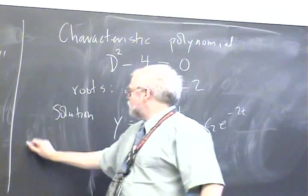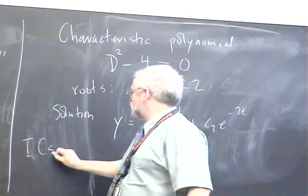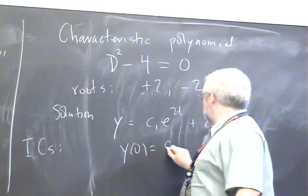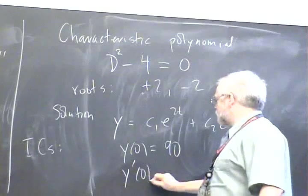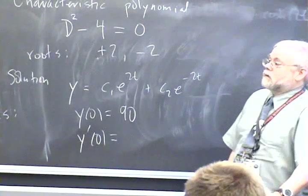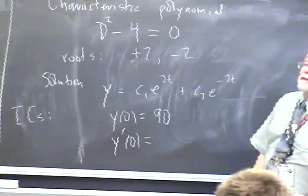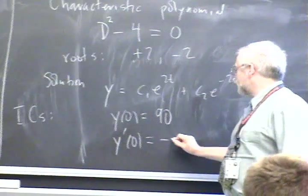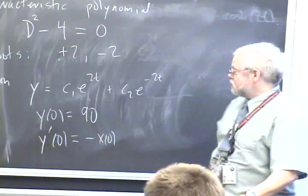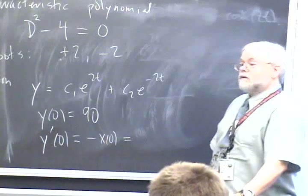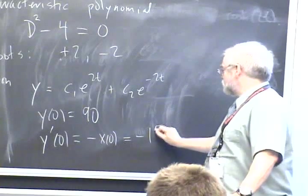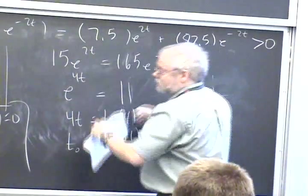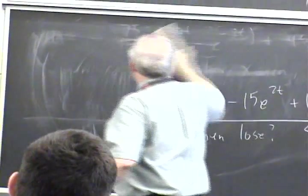We know one of the initial conditions is Y(0) = 90. We need Y'(0). Y'(0) from the second equation is -X(0). Just take the second differential equation, plug 0 in. And X(0) is 150, so this is -150. So we've got Y(t) and two initial conditions - we can solve for c₁ and c₂.